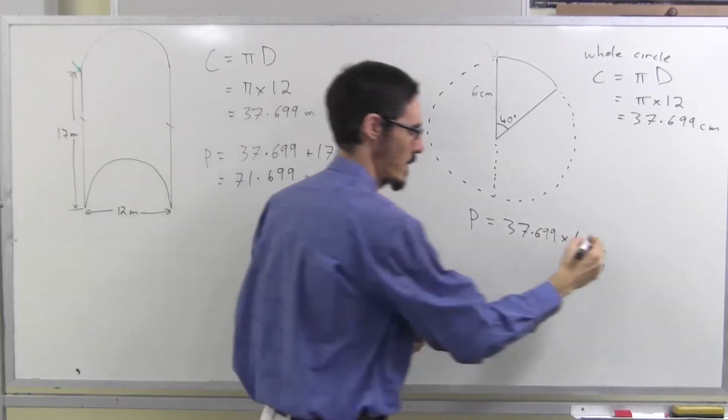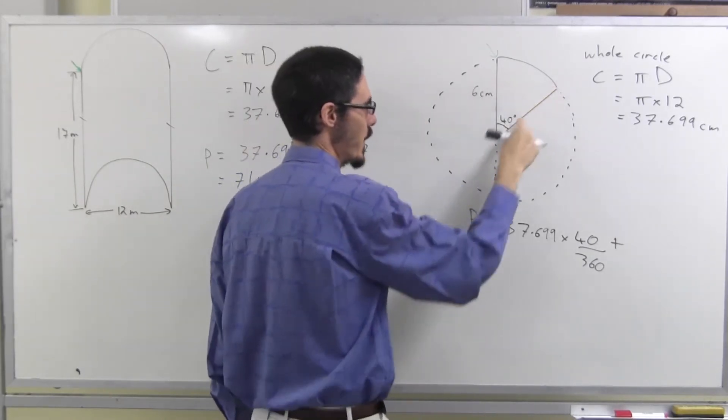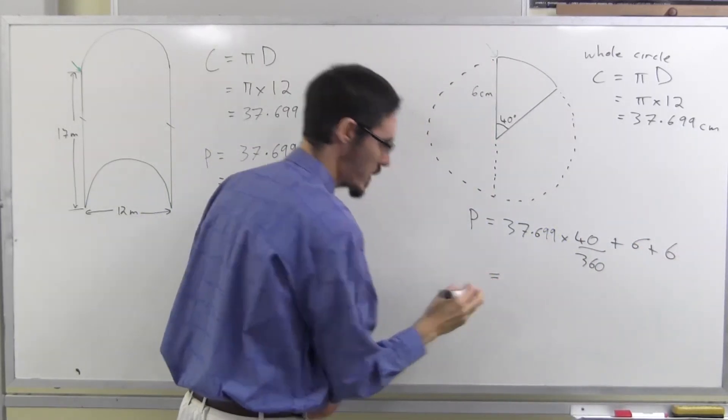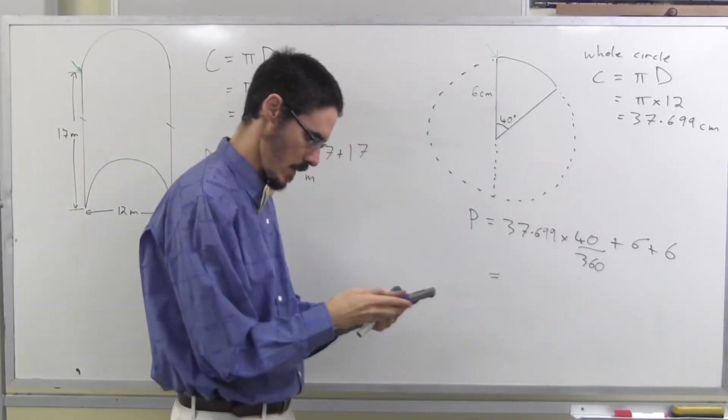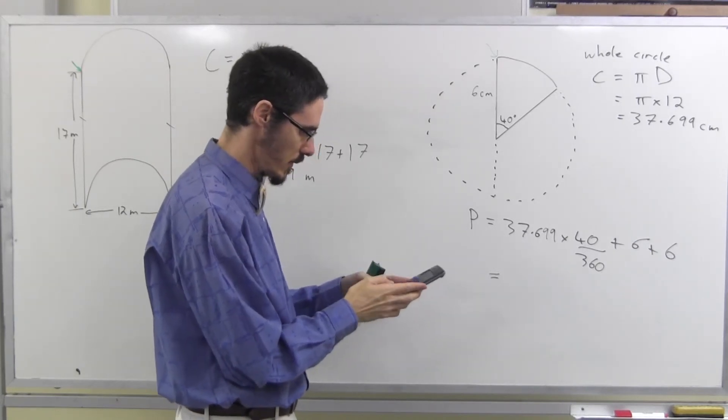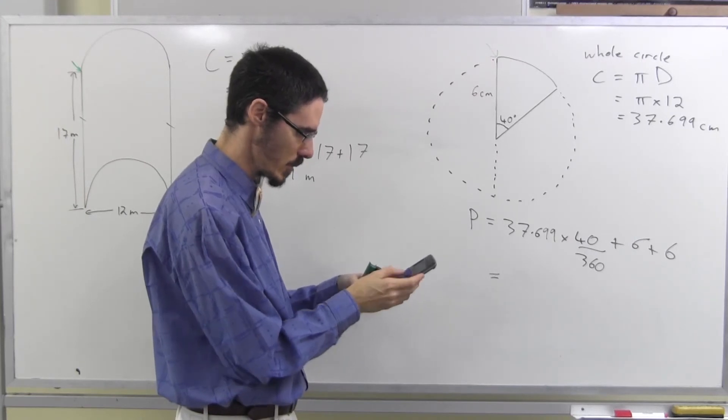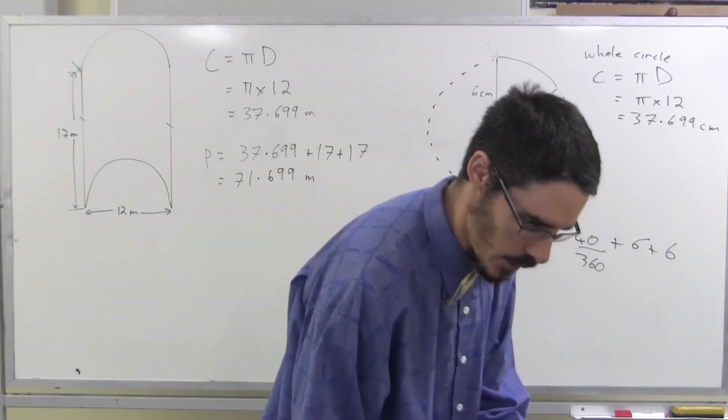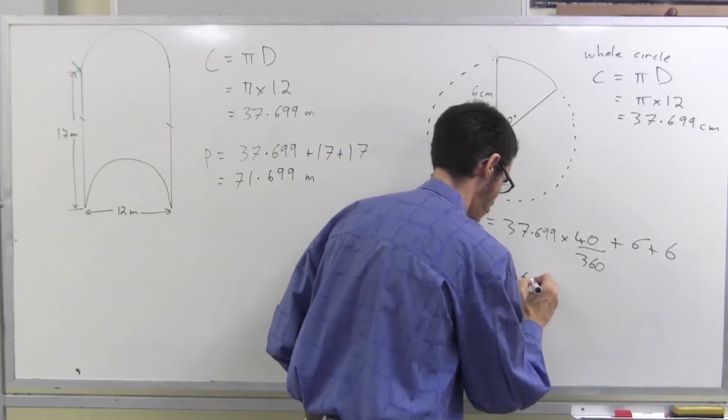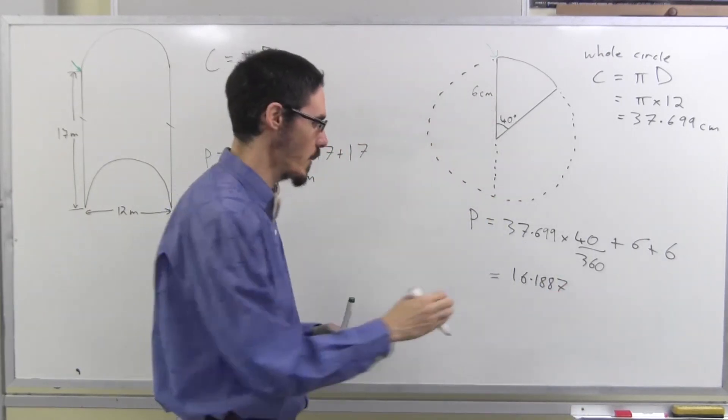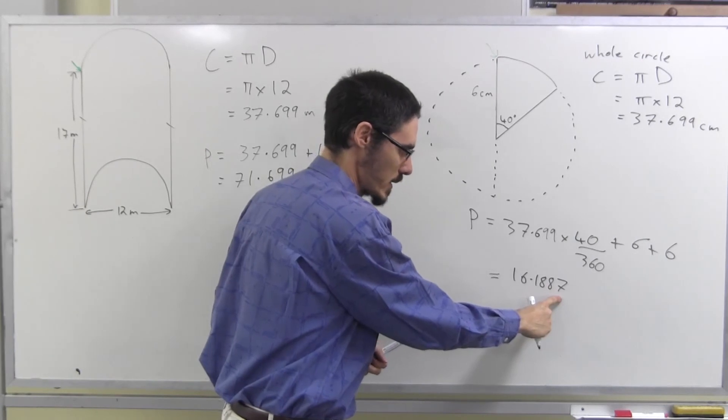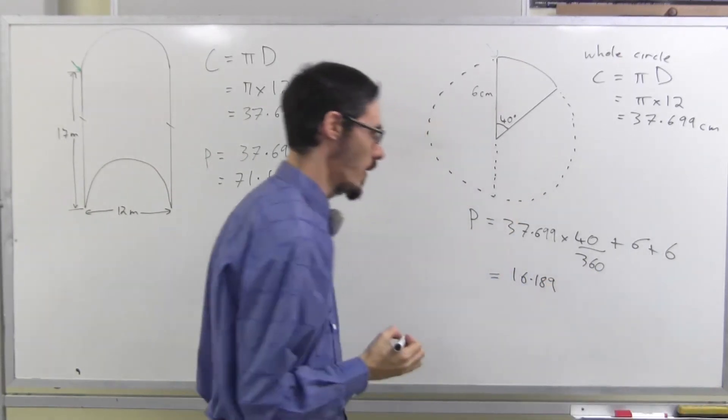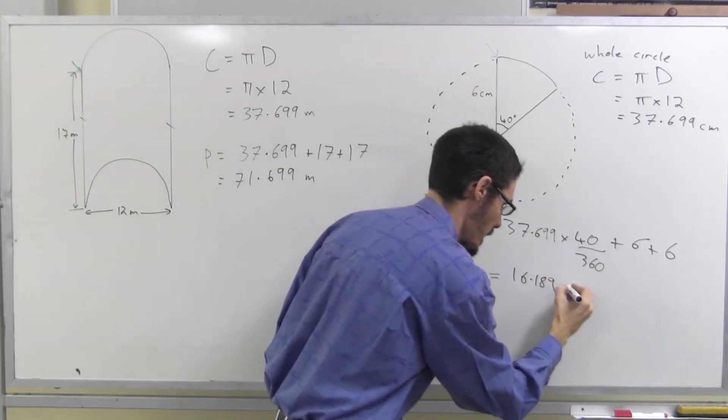Plus, this piece is 6. Plus, this piece is another 6. You are going to want your calculator. Let's go. Times 40 on 360. Oops, I typed it wrong. Plus, 6 plus 6. 16.1887. I wrote that because I want to round off to the nearest millimeter. One more digit. This is bigger than 5. Round this up. 189. And I need to not forget my units. Centimeters.